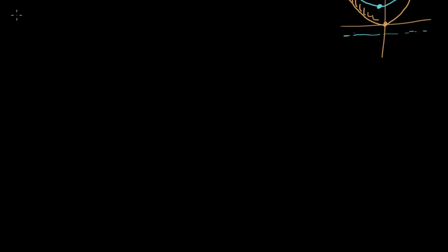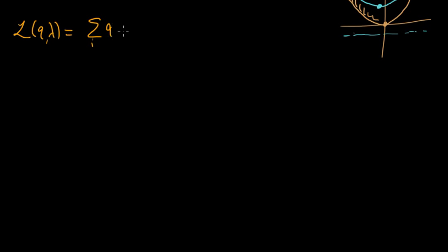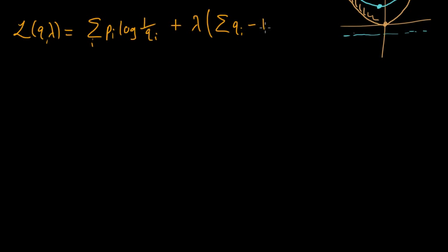So let's form the Lagrangian. The Lagrangian here is going to be a function of q and lambda, where lambda will be our Lagrange multiplier. This is going to be f, our objective function — sum of pi·log(1/qi) — plus our Lagrange multiplier times our constraint, which is the sum of qi minus 1. So the constraint is that this equals 0.